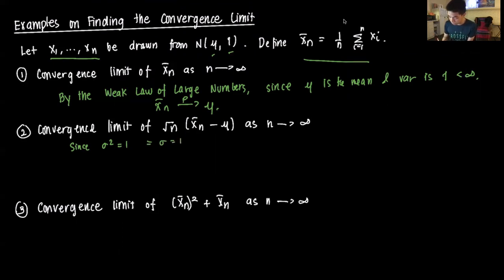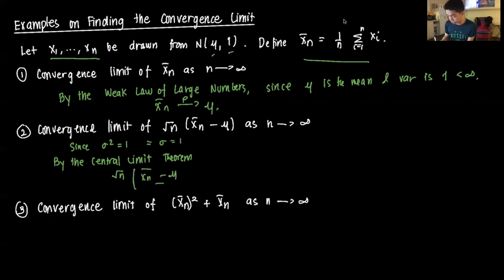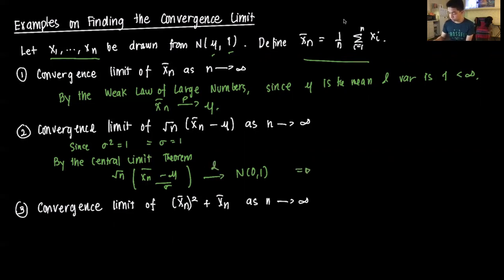We're going to use the central limit theorem. By the CLT, √n times (x̄ₙ − μ) over σ converges to a standard normal. Since σ = 1 in this case, that reduces to √n times (x̄ₙ − μ) divided by 1, which converges in distribution to a standard normal. That's the answer for that.